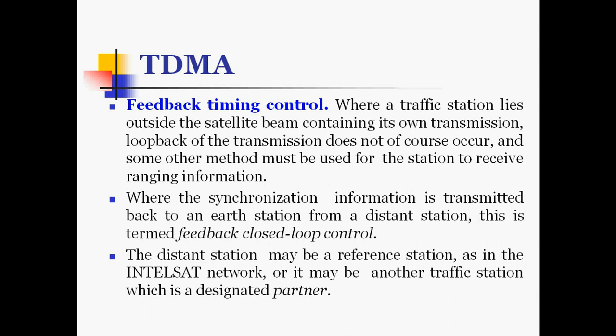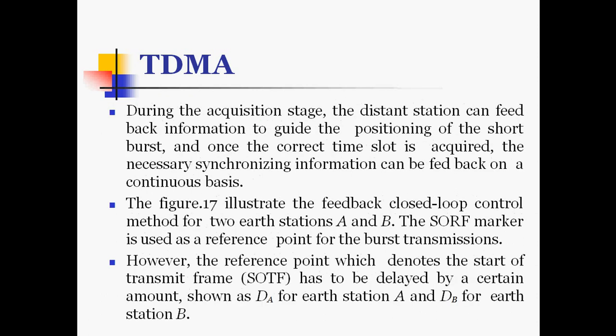The distant station may be a reference station, as in the Intelsat network, or it may be another traffic station designated as a partner. During the acquisition stage, the distant station feeds back information to guide the position of the short burst. Once the correct time slot is acquired, the necessary synchronization information can be fed back on a continuous basis.